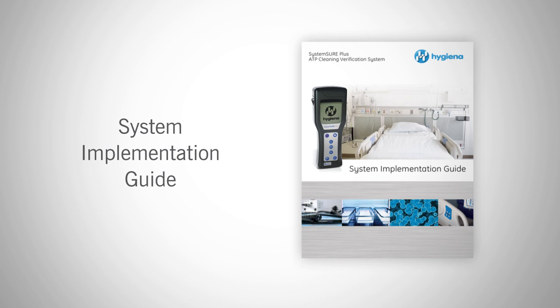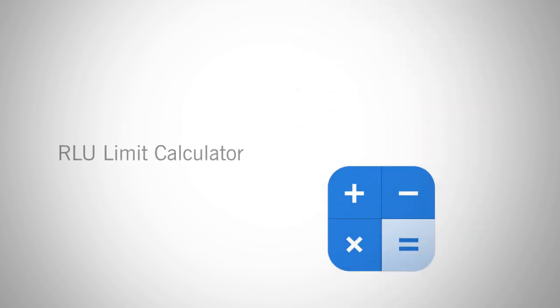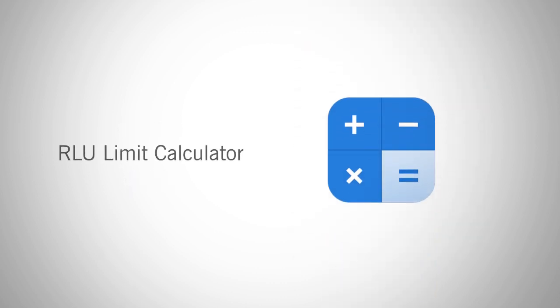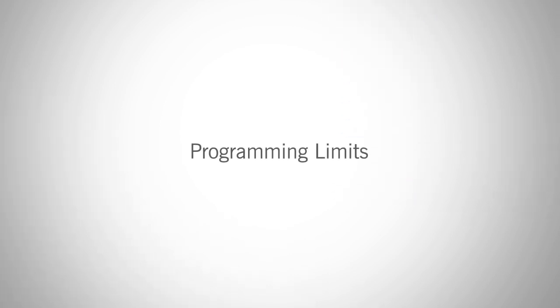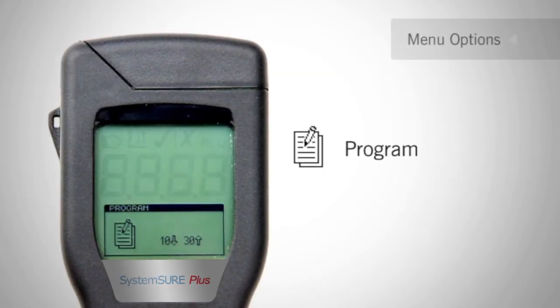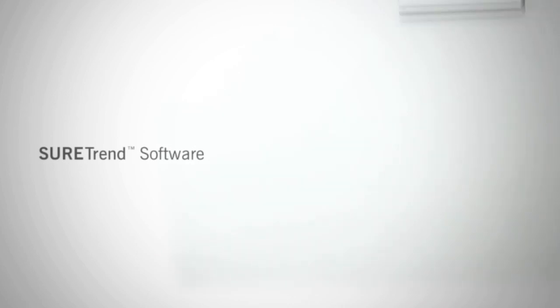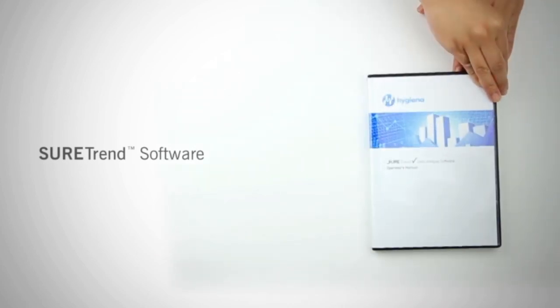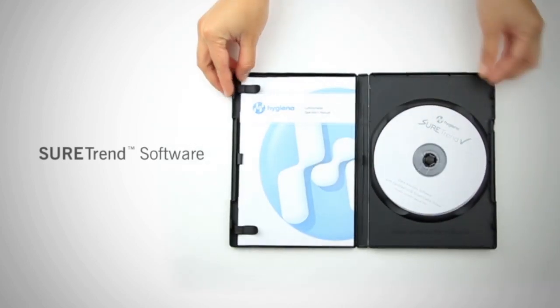For written instructions, refer to the System Implementation Guide or contact us for a limit calculator. Now that you have established custom limits, we will discuss programming those limits. You can manually adjust the pass-fail limits on the instrument through the menu option Programs. Or, to get the most out of your monitoring system and to be able to run charts and graphs with your test results, program your locations using SureTrend software and sync to your meter.